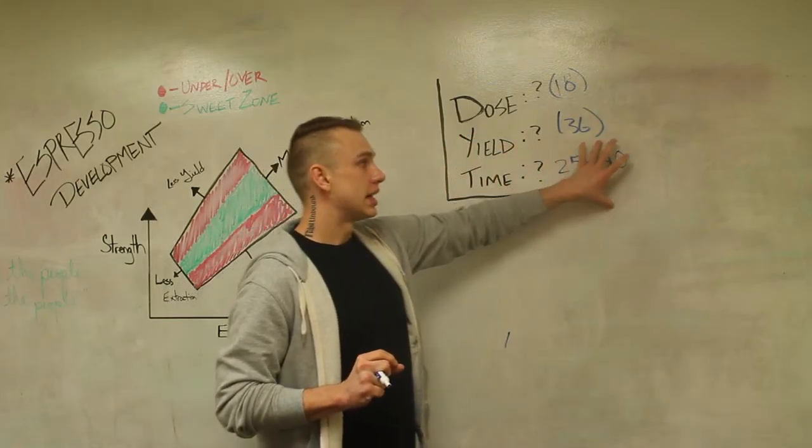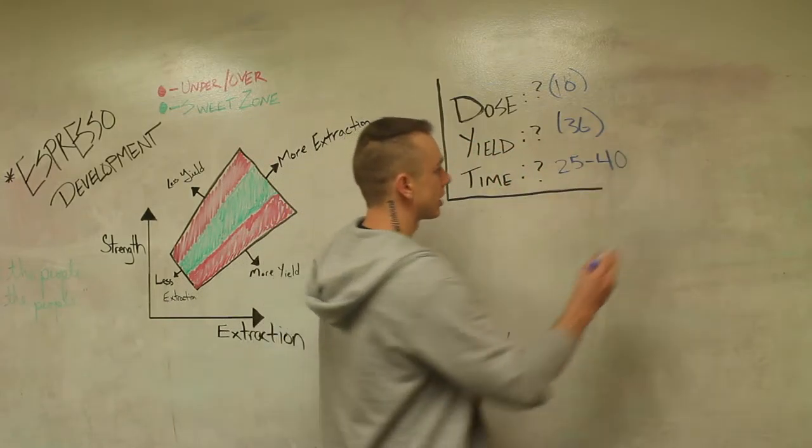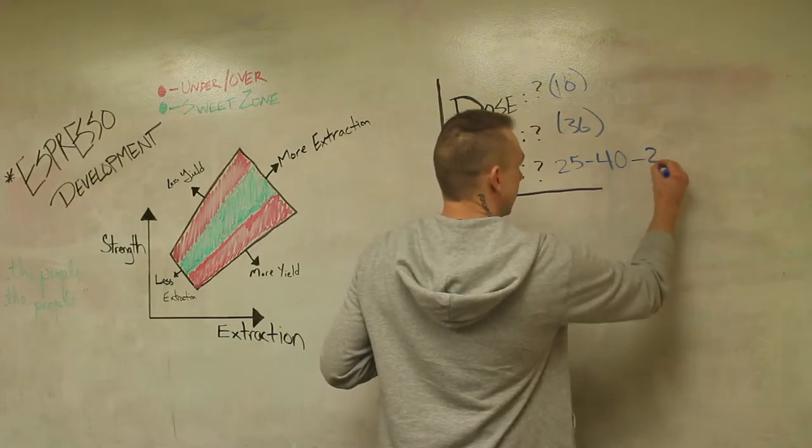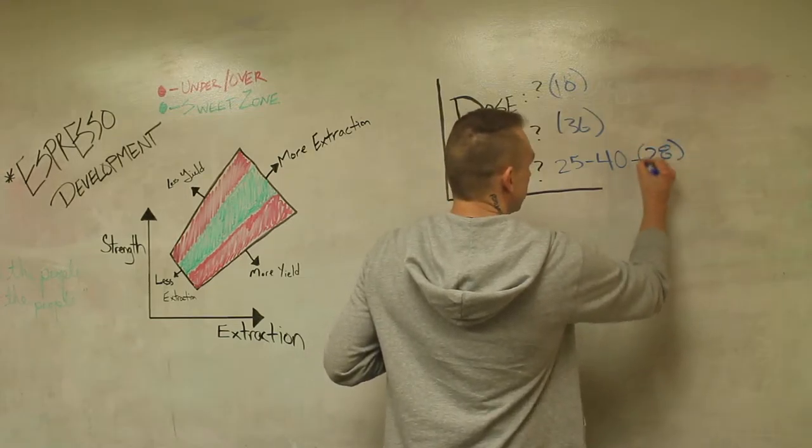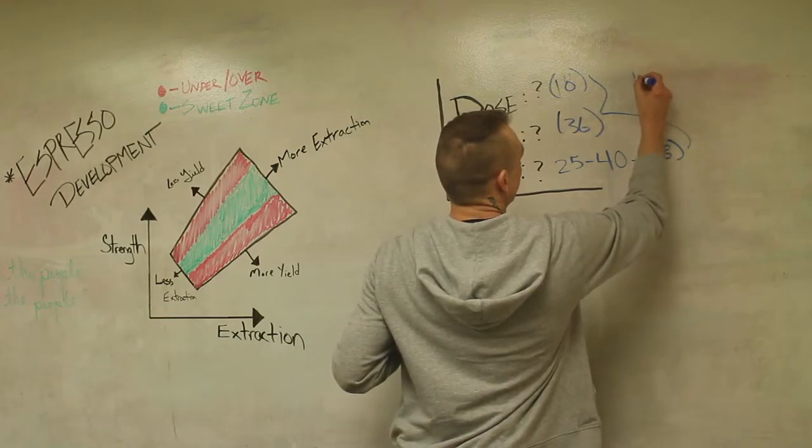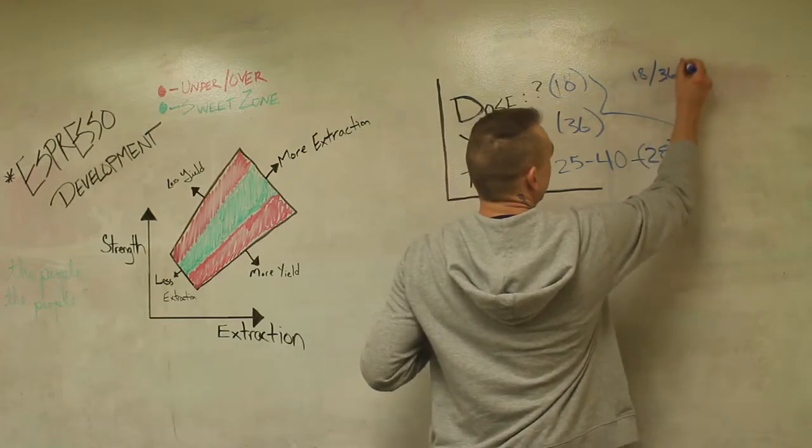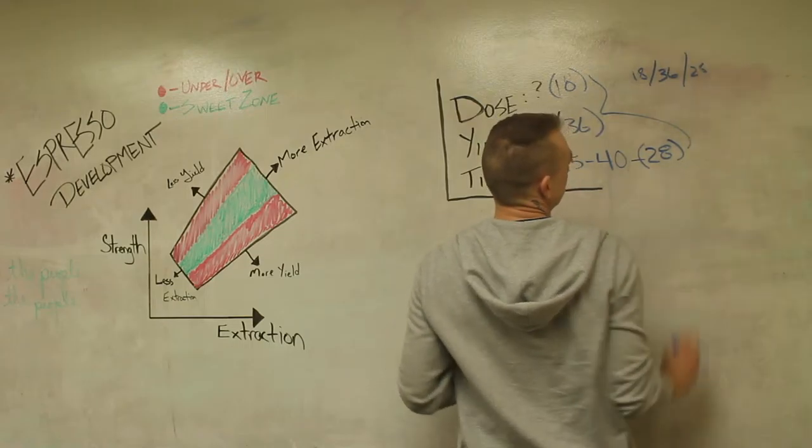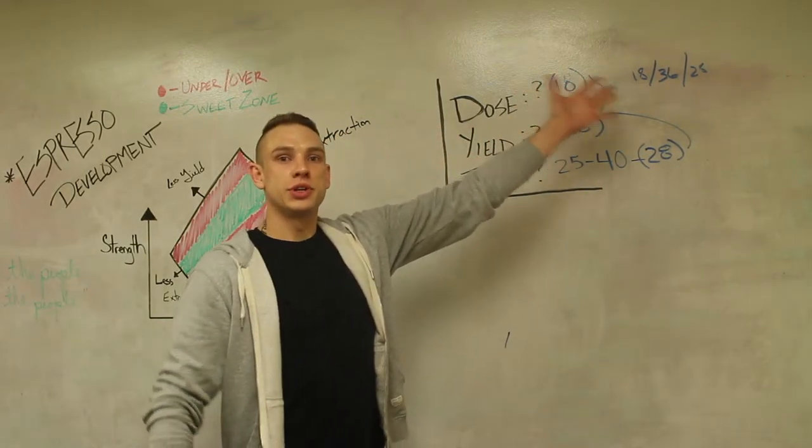Once you go ahead and figure out what that time is, you can lock that in. Let's say it's 28 seconds, and then what you get here is your recipe. And this then will be 18 grams in at a 36 gram yield at 28 seconds, and that's what you use.